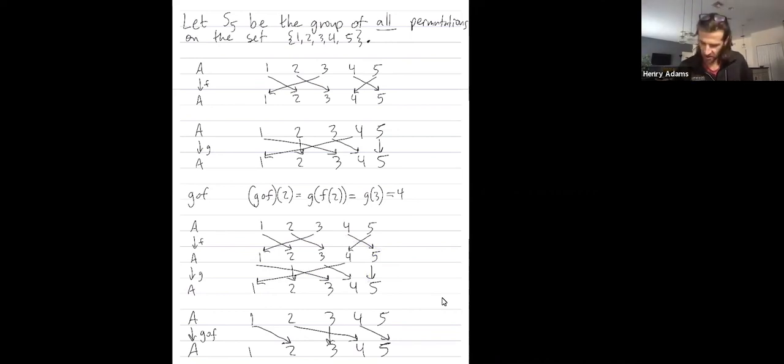And finally, where does the composition take 5? Well, F takes 5 to 4, G takes 4 to 1. So when I straighten out that string, the composition sends 5 all the way back to 1.